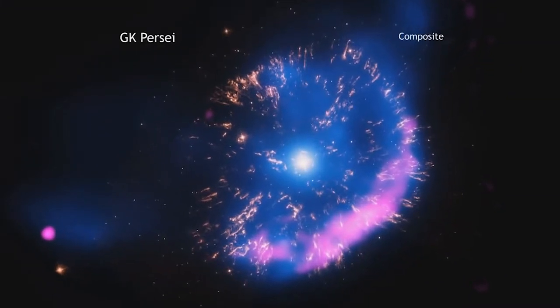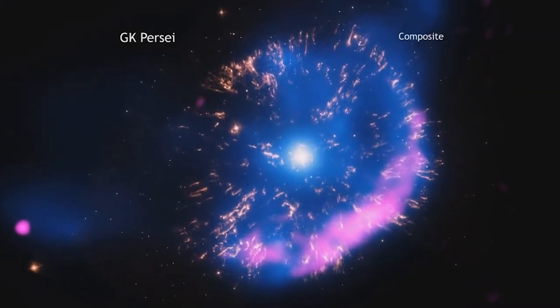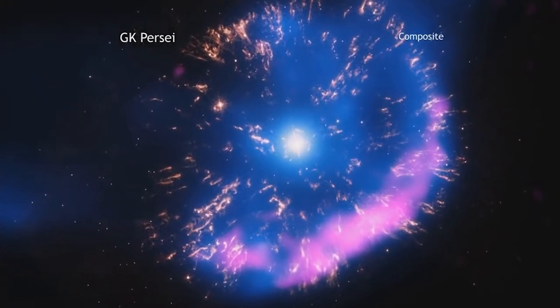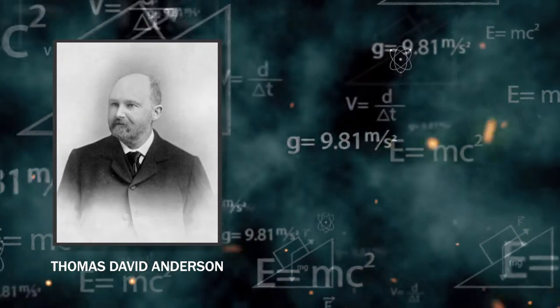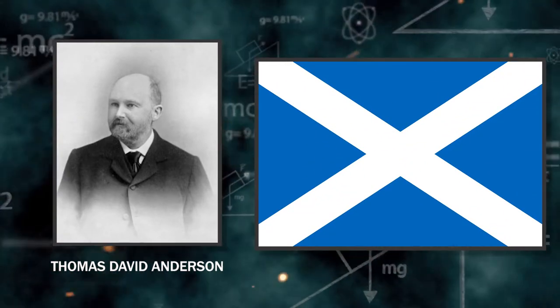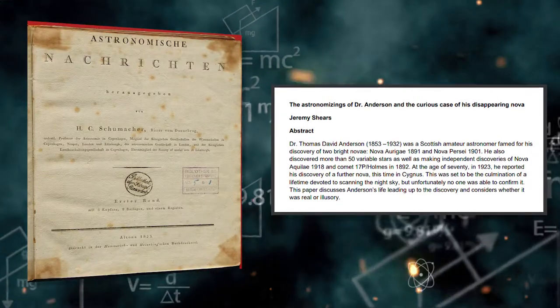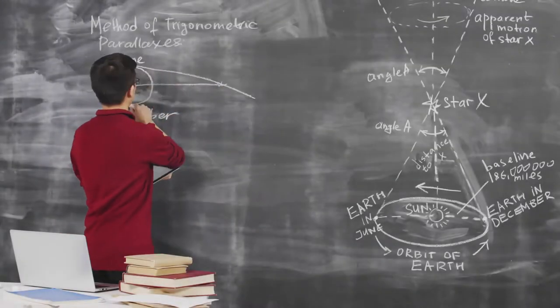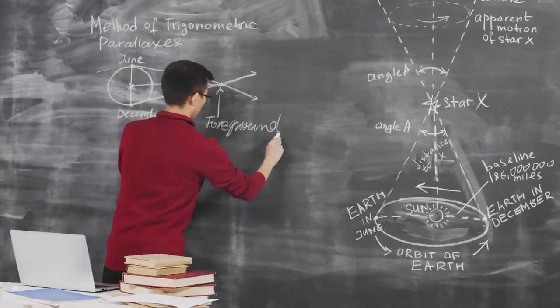Superluminal motion was observed for the first time in 1902 in the ejecta of the Nova GK Perse, which had erupted in 1901. Thomas David Anderson, an Edinburgh clergyman, made this observation of superluminal velocity. His finding was reported in the German magazine Astronomische Nachrichten, and English-speaking astronomers didn't pay attention to it until several years later.